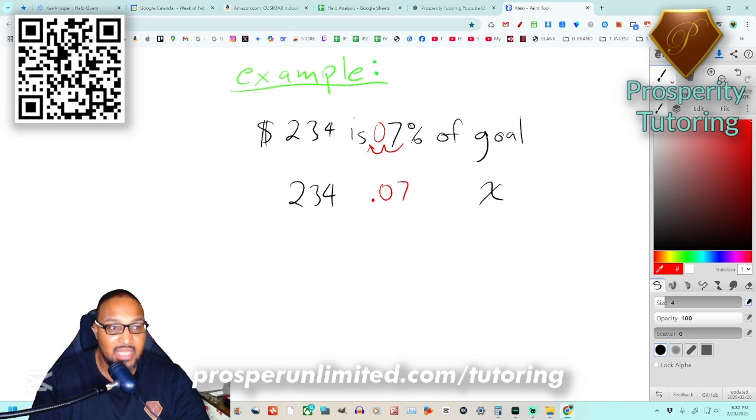Originally we would multiply the percent by the pie in order to figure out the slice. In this particular scenario we don't know what the pie is - we know what the slice is, we know what the percent is, but we don't know what the pie is. So instead of multiplying the percent by the pie, we're gonna go backwards and divide the slice by the percent.